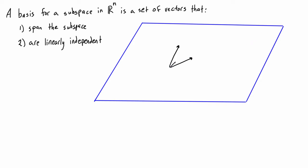If there was a third vector in the set and it's also in this plane or subspace, then the span of these three vectors is no different than the span of any two of them, because we only need two to describe the plane. We could have a hundred or infinite vectors in this plane, but we only need two of them to describe the plane itself. In general, we have n vectors in a basis for a subspace with n dimensions. There are infinite possible bases for any given subspace, because we could pick any two linearly independent vectors in the plane — but always only n vectors for an n-dimensional subspace.